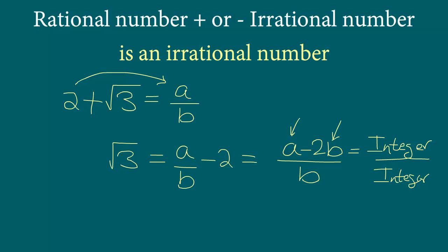Now keep in mind the numerator can be 0. We don't know the exact value, but we do know that square root 3 equals some integer over integer. And we know any integer over integer where the denominator is not equal to 0 is a rational number.